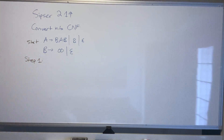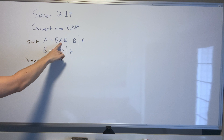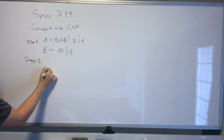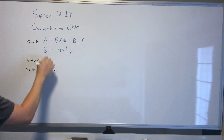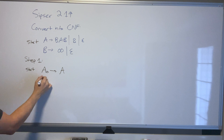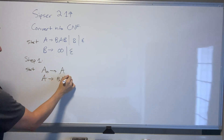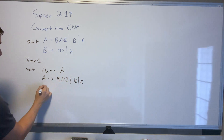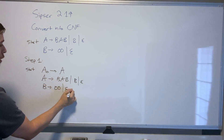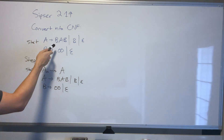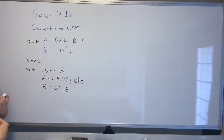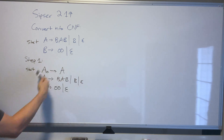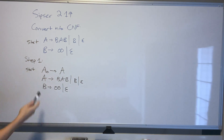Step one is to ensure that the start variable doesn't appear on the right-hand side of any rule. Since it does appear there, we fix it by creating a new start variable A₀ that goes to the old start variable A, then copying the grammar exactly as it appears. This is valid because any derivation the original grammar could do, this one can too — we just prepend A₀ → A at the front.